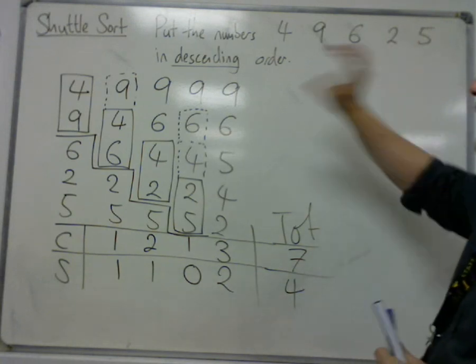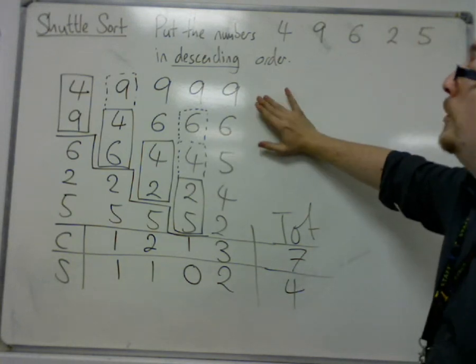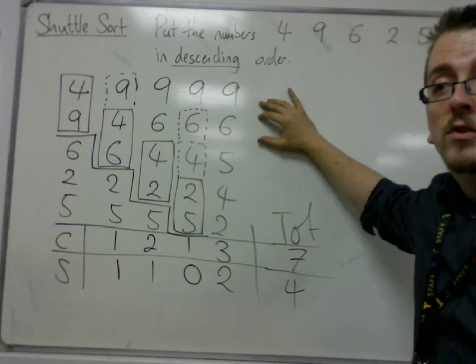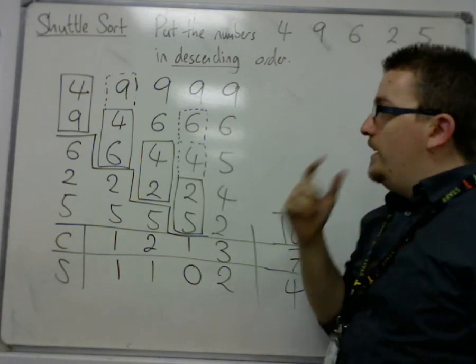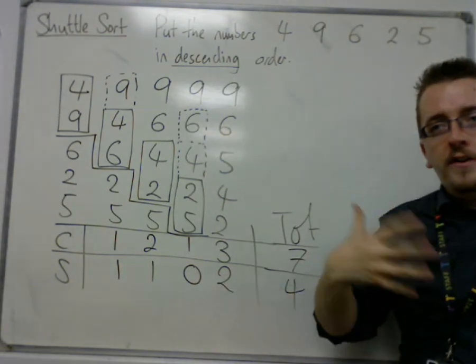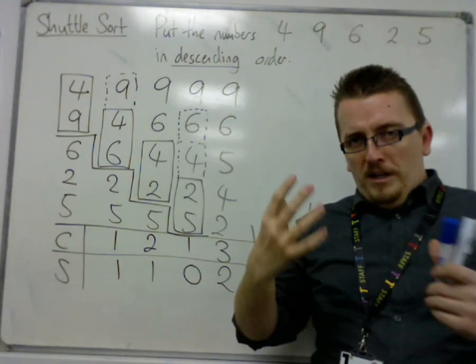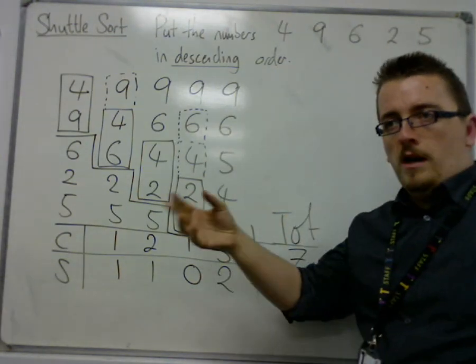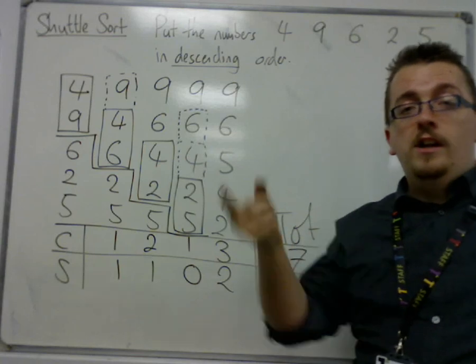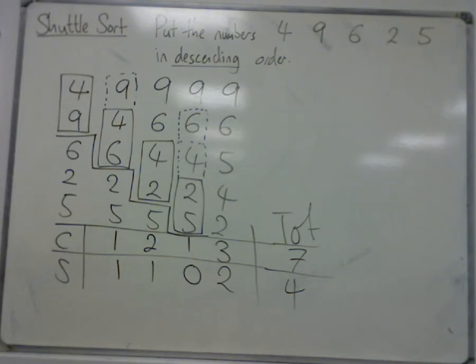And that is doing shuttle sort and putting a list of numbers in descending order. You've just got to put a little bit more thought into it. You don't expect that you would have to, but it's because you're probably not used to putting numbers in descending order rather than ascending. I'll see you next time.